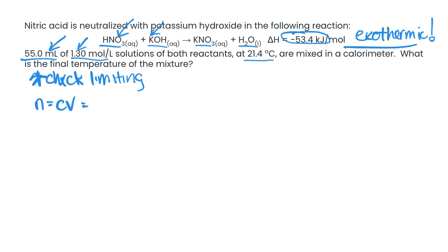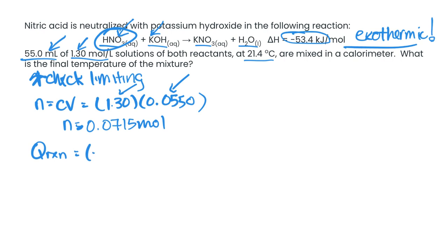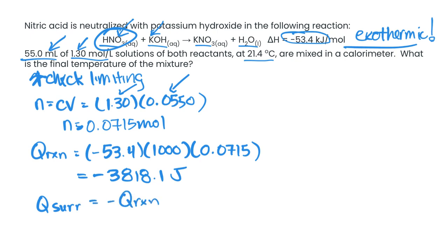We're going to find the moles. We're going to do n equals C times V. So we're going to take 1.30 times 0.0550. We're using the 55 mL only because we are just focusing on just one of the reactants here. So that gives us a number of moles of 0.0715. And then from here we're kind of working backwards because we need to get to the temperature. So we can figure out the Q of the reaction by taking our delta H and now we need to multiply it by a thousand to get it into joules. And we need to multiply it by the number of moles. So that is going to give us a negative 3818.1 joules. And then our Q of our surroundings is going to be the negative Q of our reaction. So it's going to be plus 3818.1 joules.